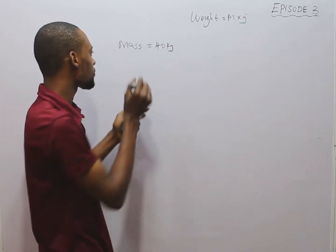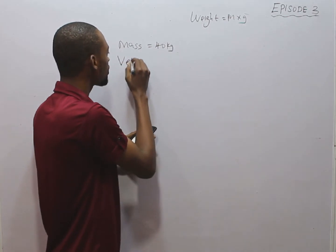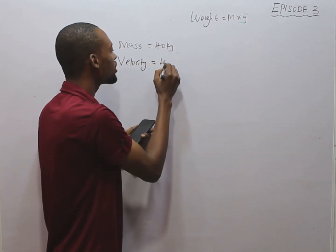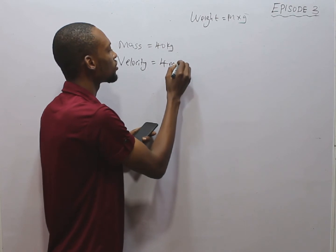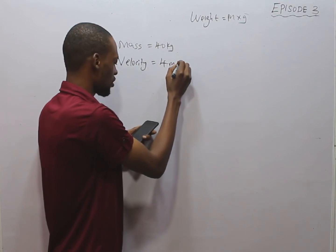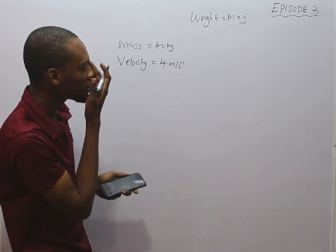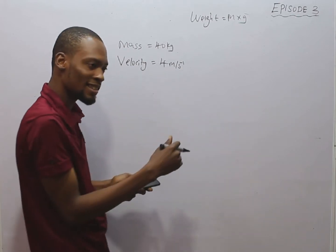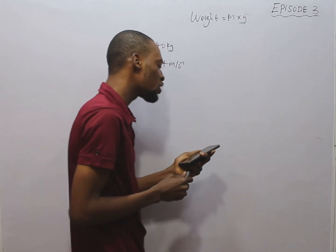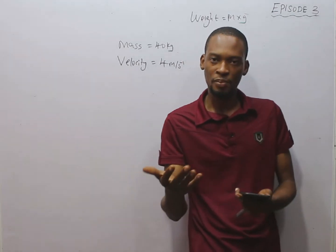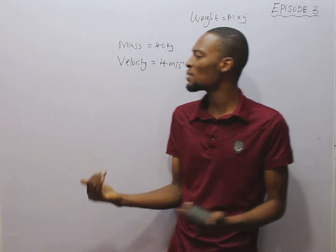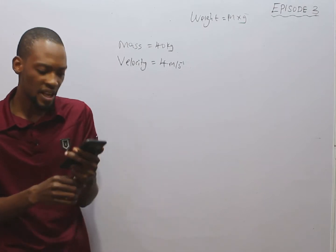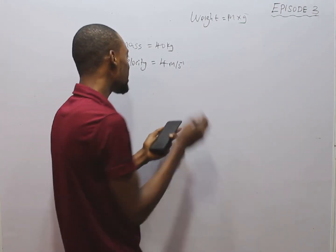This body moves with a velocity v of 4 meters per second. Velocity is meters per second, which is distance over time. Velocity is simply the displacement of a body over time, and displacement is distance traveled in a specified direction.